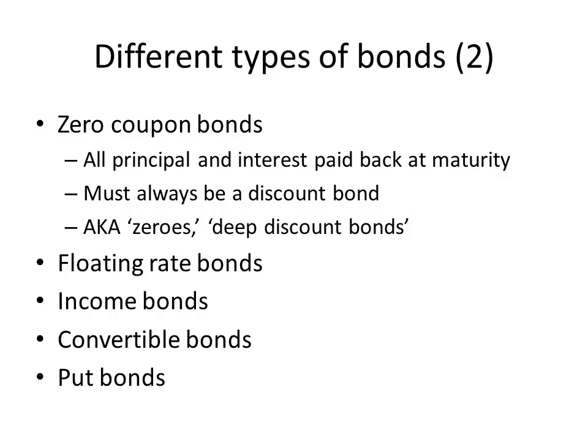Then we have income bonds, which are unusual in that the borrower only has to pay coupons when their earnings are high enough to cover them. This is like a friend borrowing money and saying 'I'll pay you back when I get a job' — whether they get a job is totally within their control, so they may never pay you back. These bonds are really, really risky. The only time we see them used is by companies basically in a death spiral, and some colleagues in finance say income bonds have the smell of death about them.